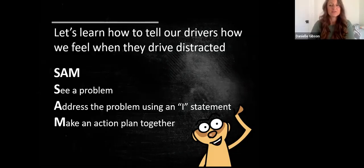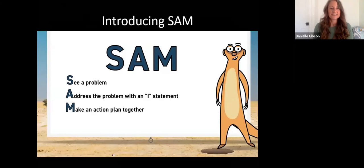On the next slide, you see another slide introducing Sam - not Sam the meerkat because you already met him. But now this is introducing the idea of using Sam's name to remind you how to solve a problem. You see again that S is for see a problem, A is for address the problem with an I statement, and M is for make an action plan together. On the next slide, you're going to see a video where Sam teaches you about this.